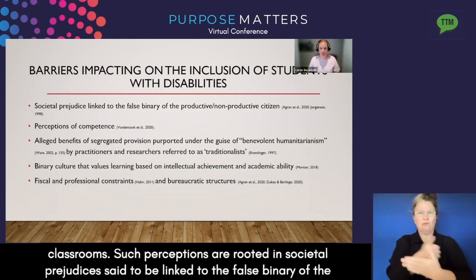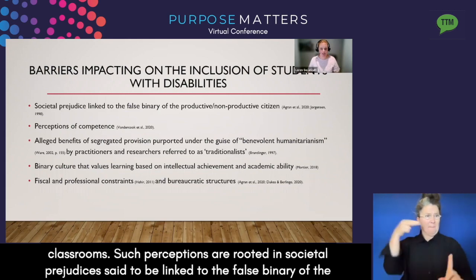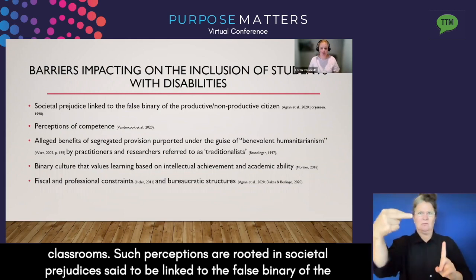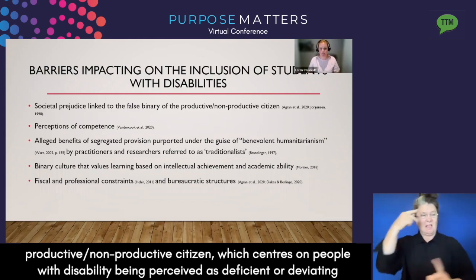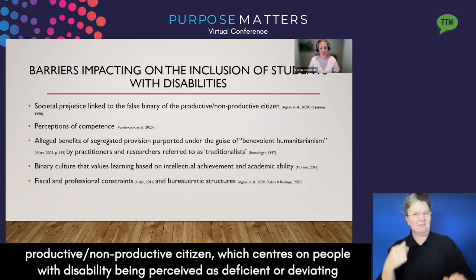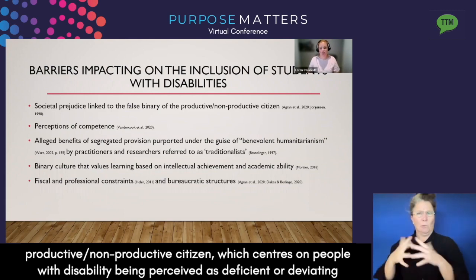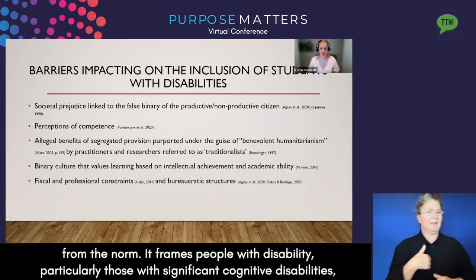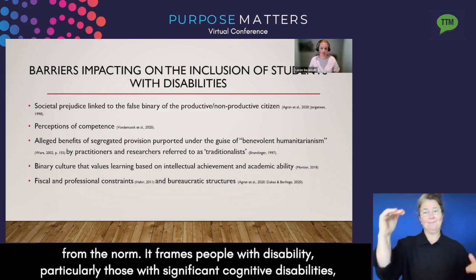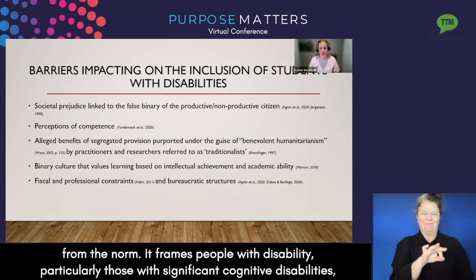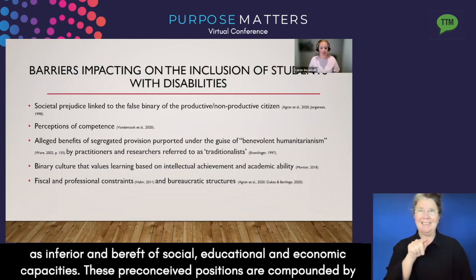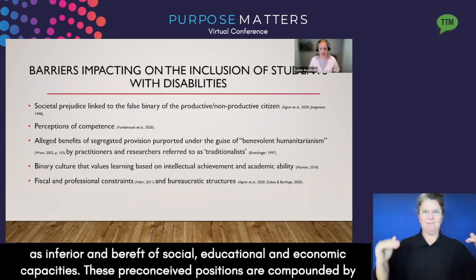Such perceptions are rooted in societal prejudice said to be linked to the false binary of the productive/non-productive citizen, which centers on people with disability being perceived as deficient or deviating from the norm. It frames people with disability, particularly those with significant cognitive disabilities, as inferior and bereft of social, educational and economic capacities.